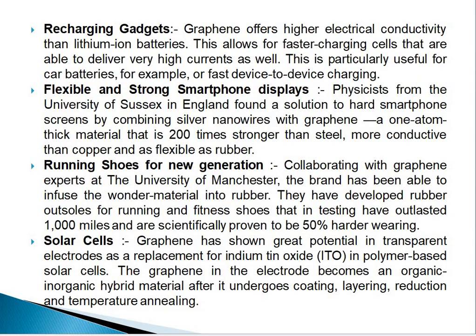The next advantage is recharging gadgets. Graphene offers higher electrical conductivity than lithium-ion batteries, allowing for faster-charging cells that are able to deliver very high current as well. This is particularly useful for car batteries or fast device-to-device charging. Next is flexible and strong smartphone displays: researchers from the University of Sussex in England found a solution to hard smartphone screens by combining silver nanowires with graphene — a one-atom-thick material that is 200 times stronger than steel, more conductive than copper, and as flexible as rubber.